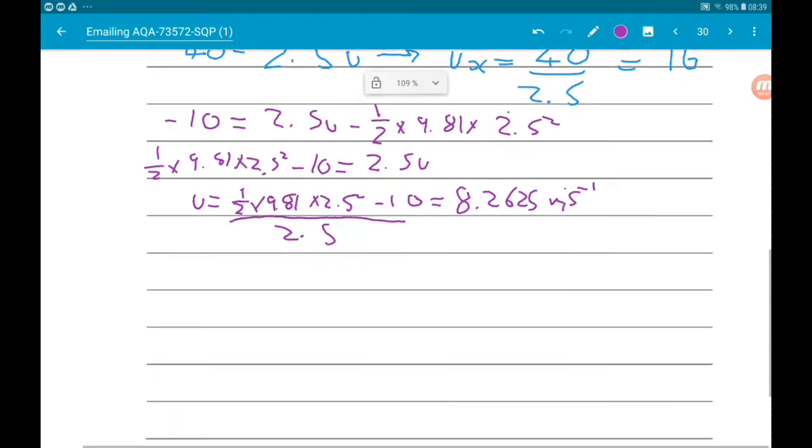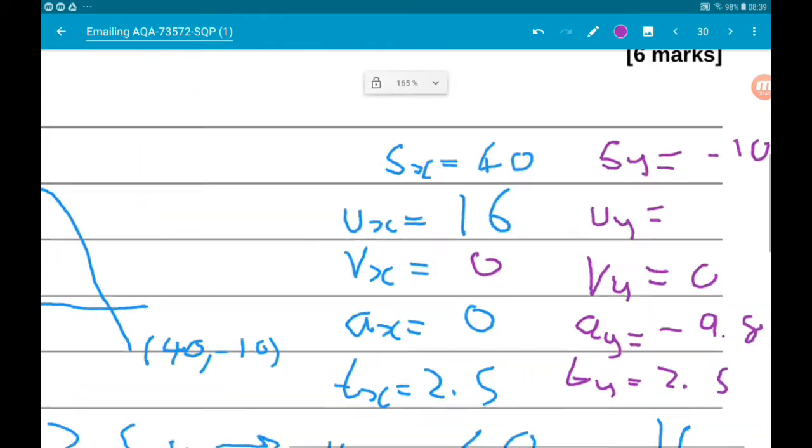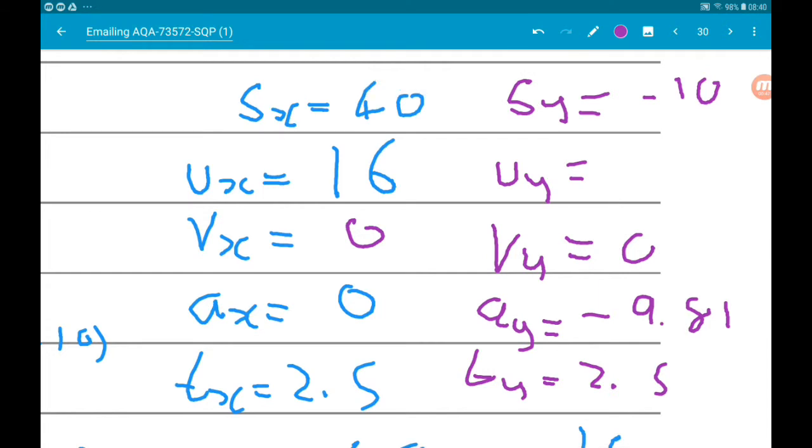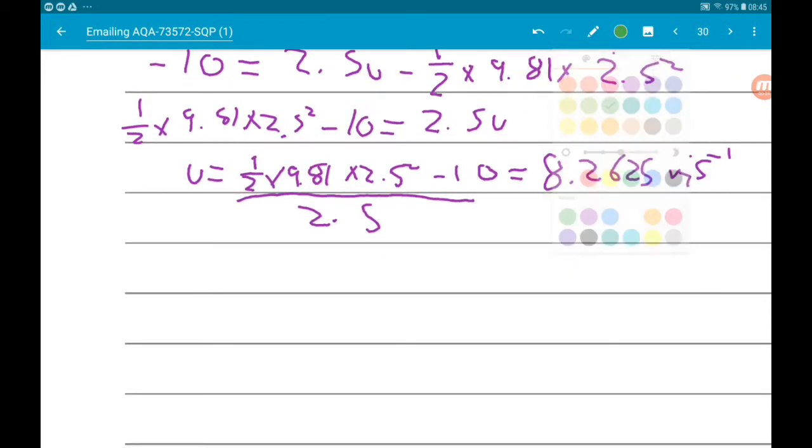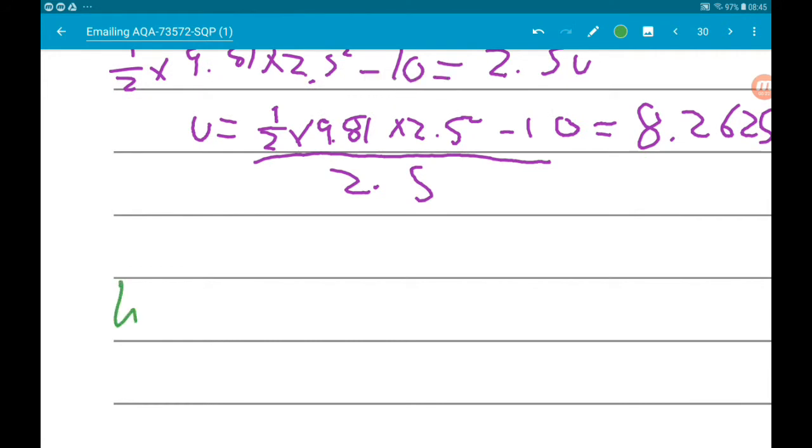Cool. Now that we know the initial velocities, we can start to work out what we actually want. We know that we want the vertical displacement to be 3.